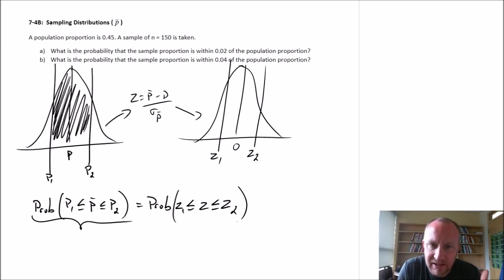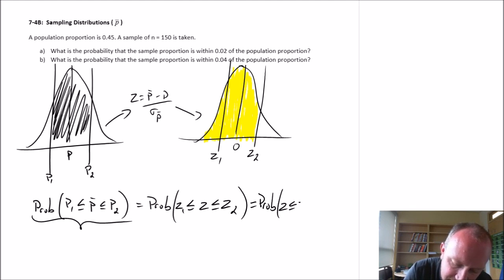Now to calculate that probability, we need to figure out the cumulative probability. Remember those tables are always giving us the cumulative or the probability to the left of our value of interest. So I need to figure out the probability that z is less than or equal to z2, and then subtract from it the probability that z is less than or equal to z1, and that leaves us just that yellow space which is our probability of interest.